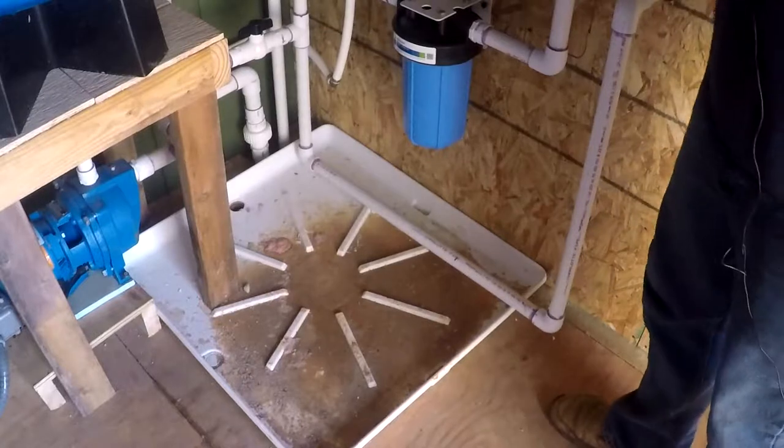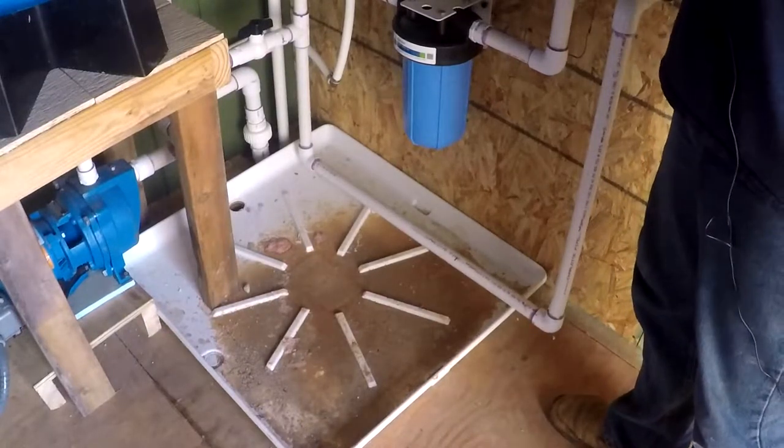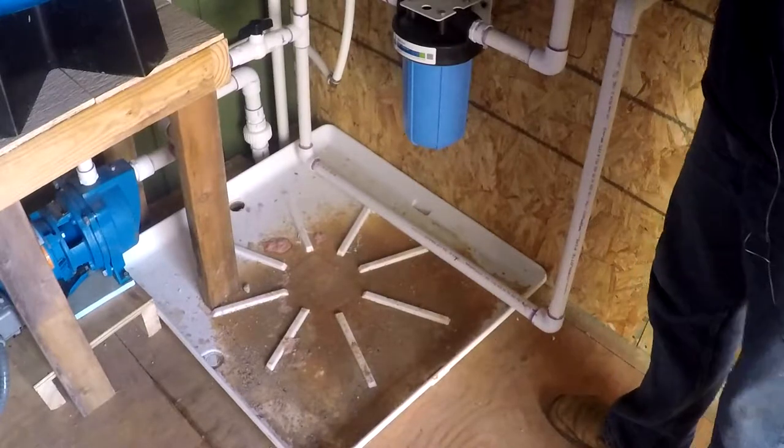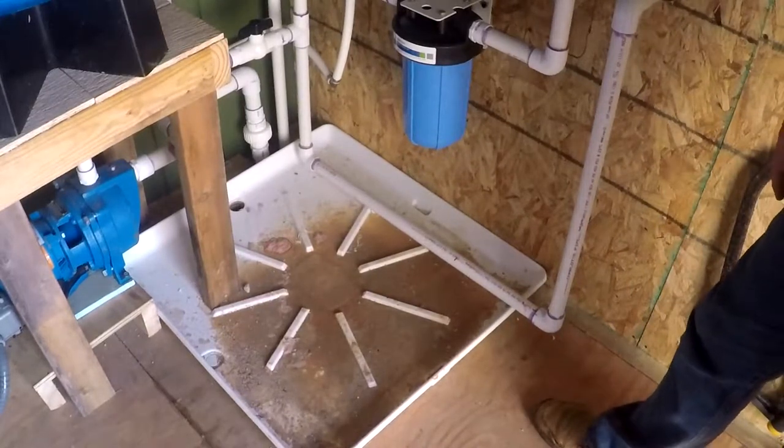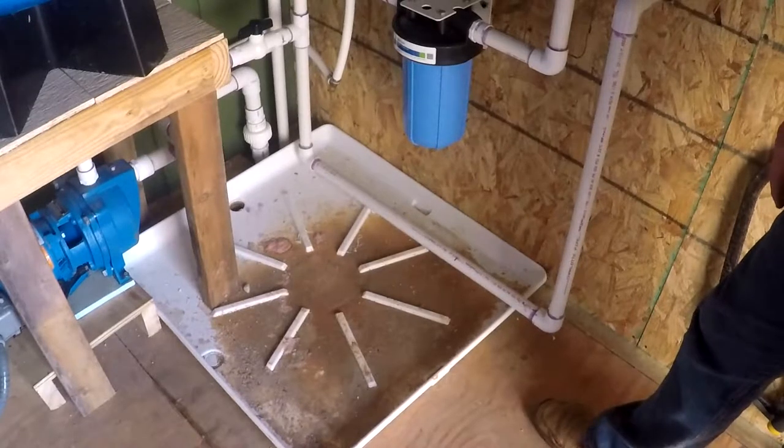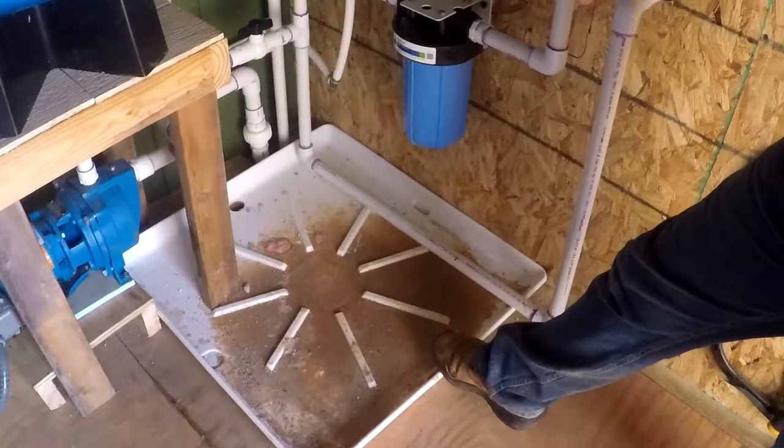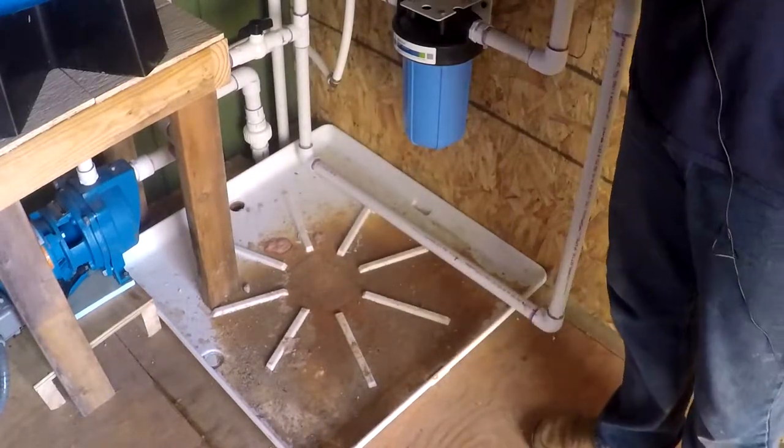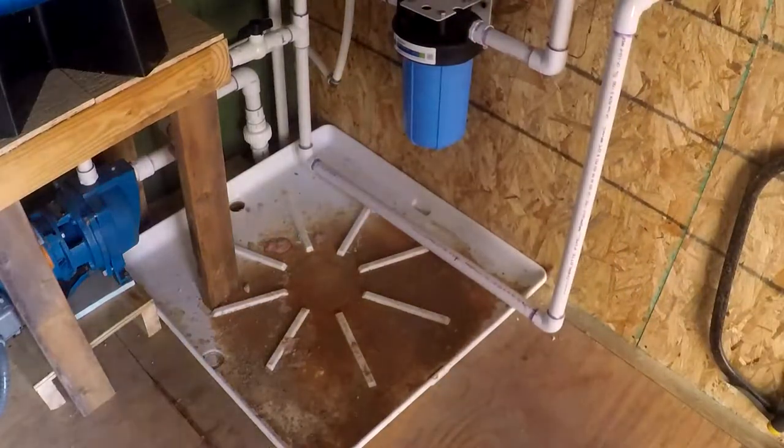Before, every time I took off one of these filters, I had to dump the water in a bucket and try to catch as much of it as I could because it was getting the floor wet. I was very tired of dealing with that, so I installed this catch pan with a drain hole. Now I can just unscrew this, the water will go in the pan and drain off or evaporate.